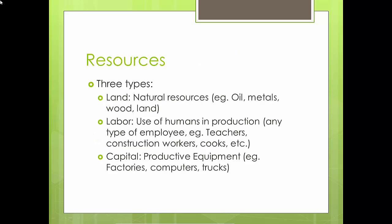Resources are things you can use to produce something. They are explained as three main types: land, labor, and capital. Land isn't just spots of the earth — it also includes all types of natural resources, such as oil, minerals, lumber, etc. Labor is pretty self-explanatory; it basically includes any human hired for work. And capital includes any sort of machinery or equipment used, such as computers, robots, machines, etc.